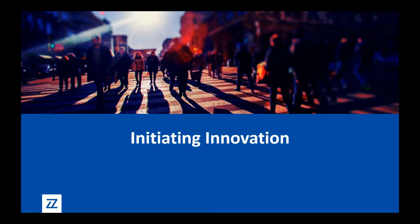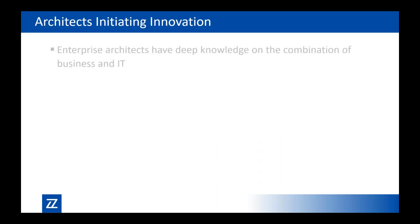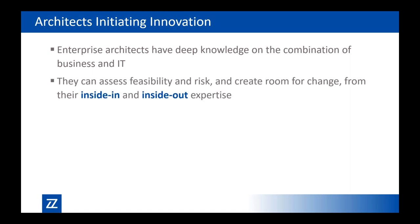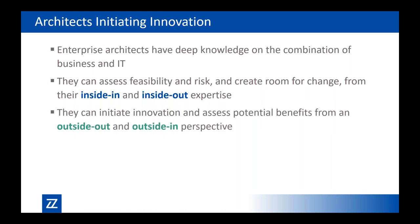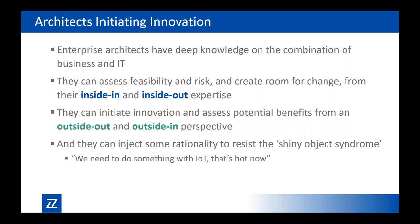That was the second type of role. The third is initiating innovation — the most forward-facing role. Architects have deep knowledge of the combination of business and IT; they're on the boundary of these two disciplines. With inside-in and inside-out perspectives they can assess feasibility, risk, and create room for innovation. But they can also look from outside-in and outside-out perspectives to initiate innovations that come from outside the organization, bringing things into the enterprise — in that way they become the starting point for innovation.